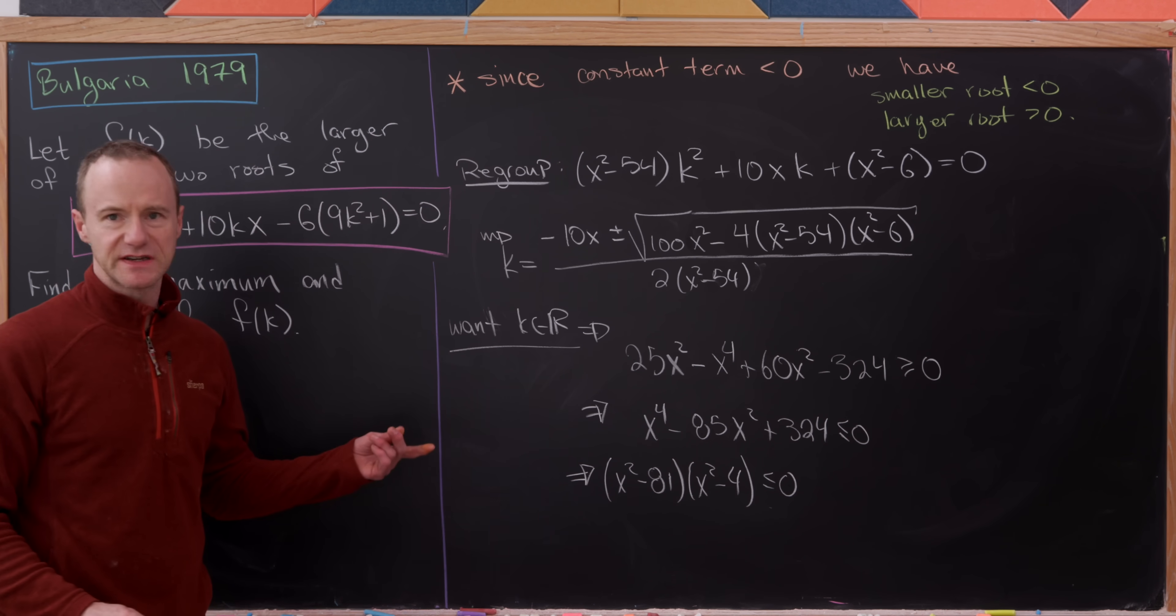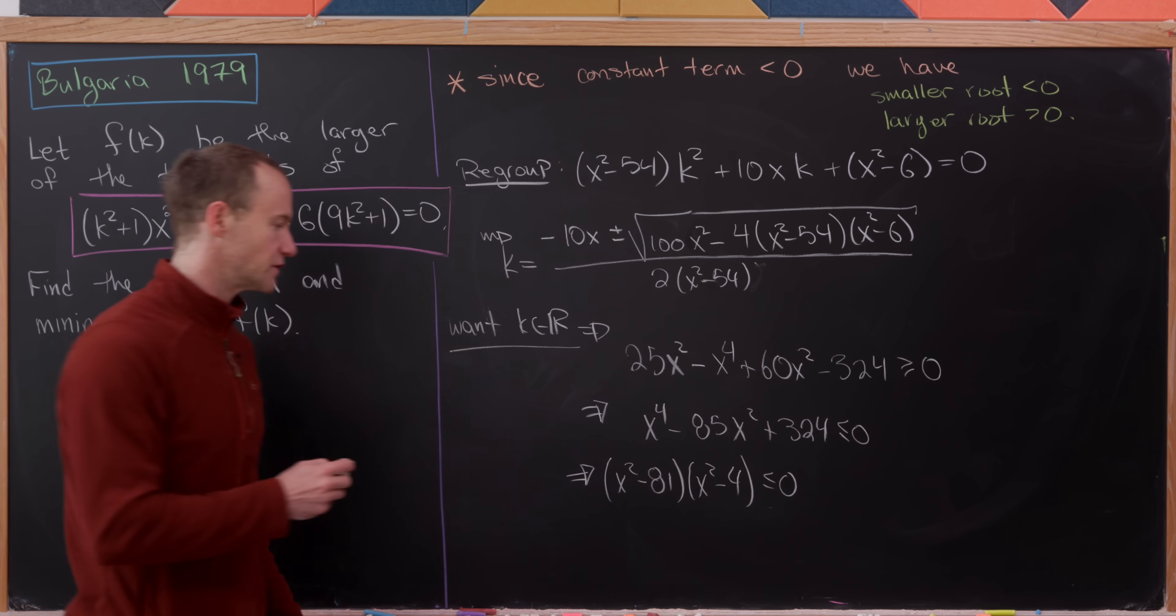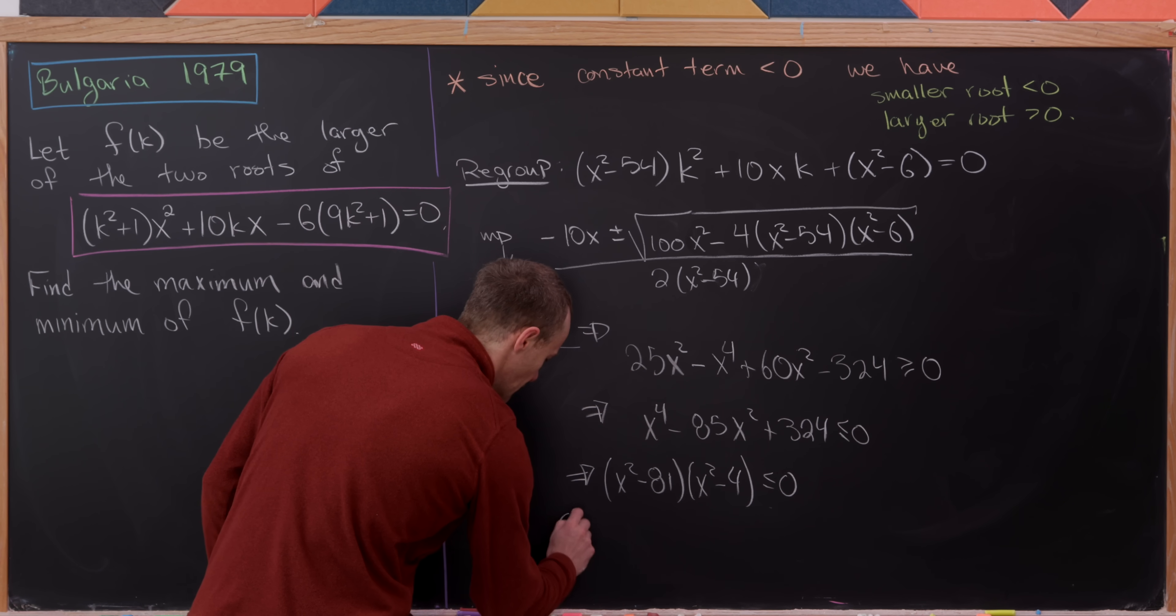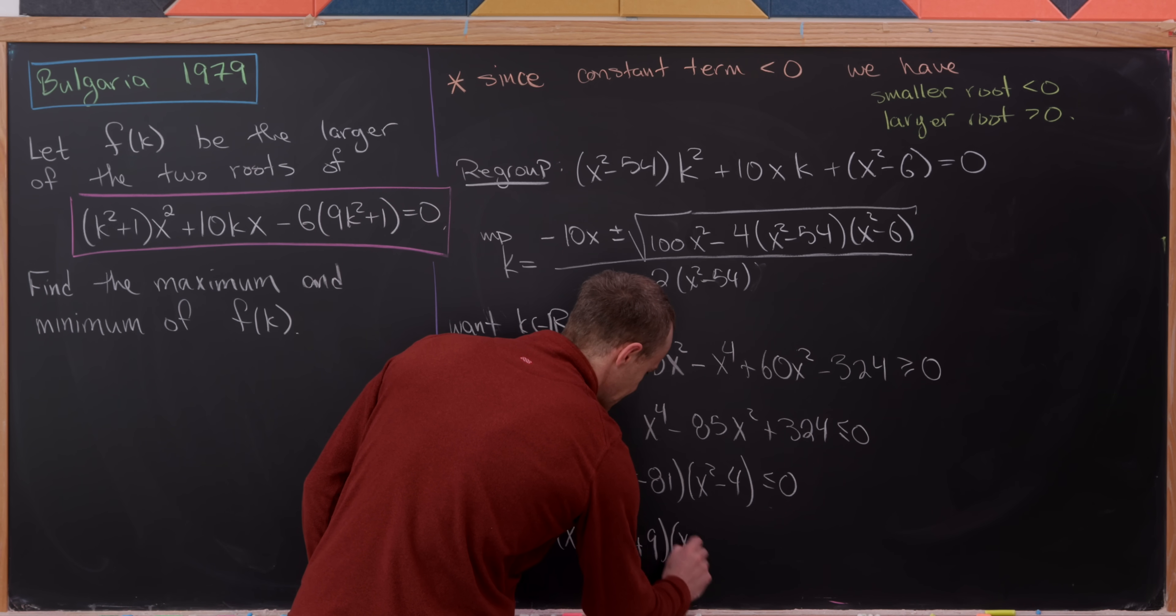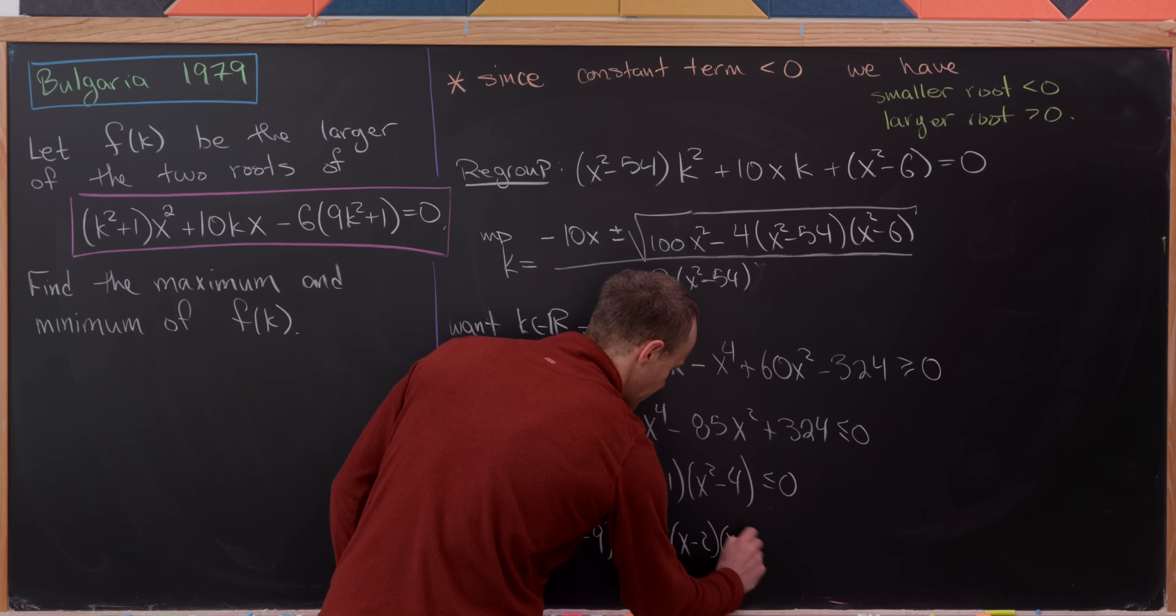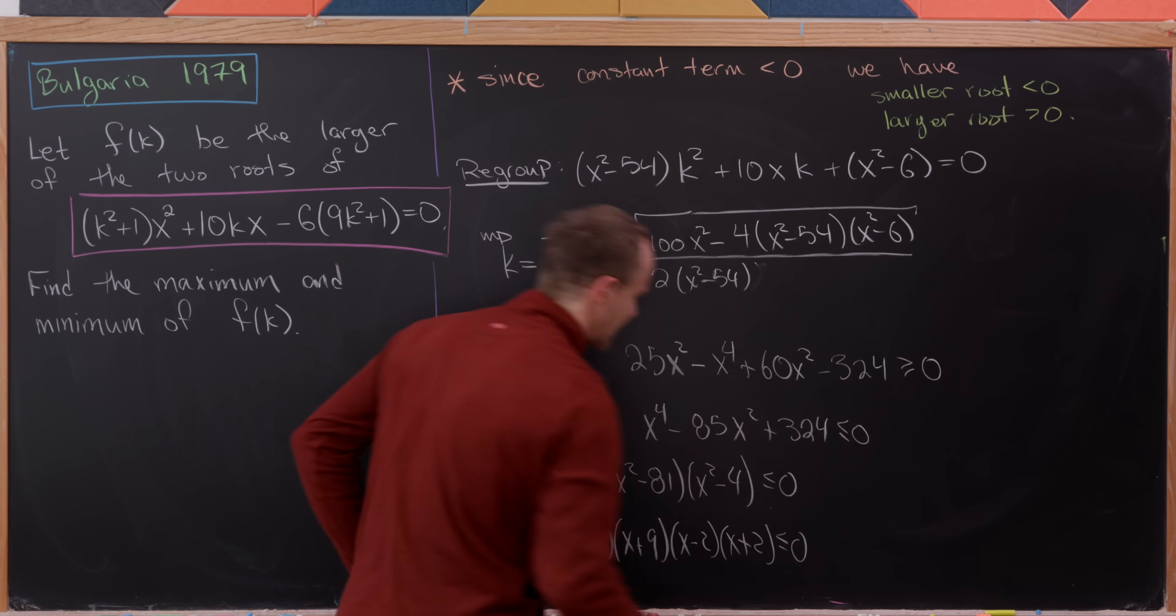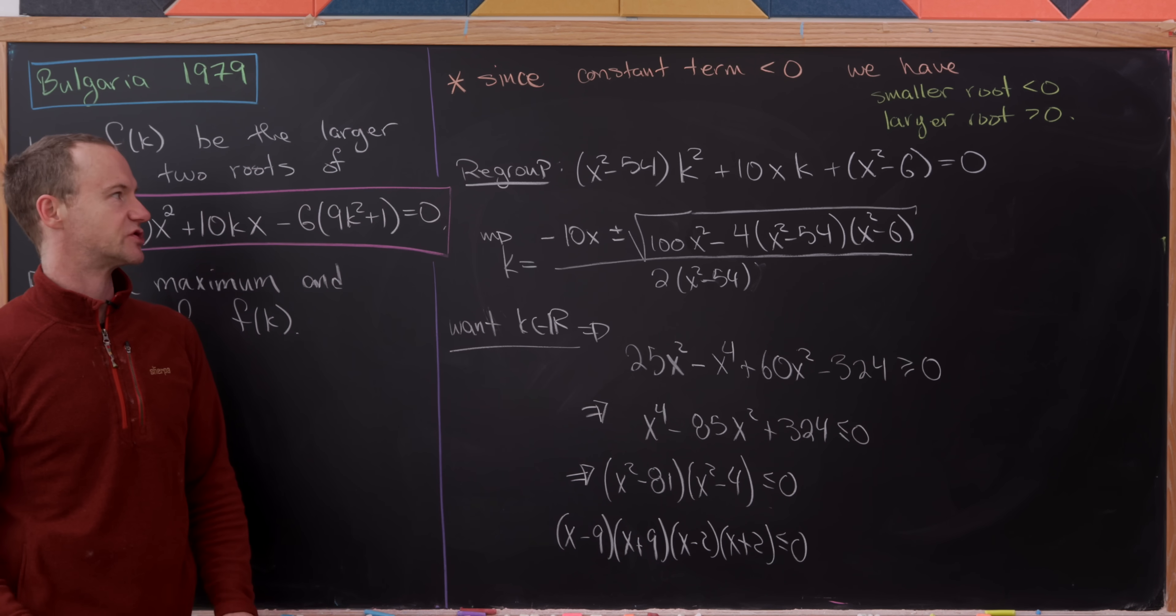Those are just differences of squares, so they factor nicely as well: (x - 9)(x + 9)(x - 2)(x + 2) ≤ 0.